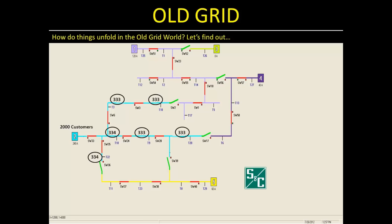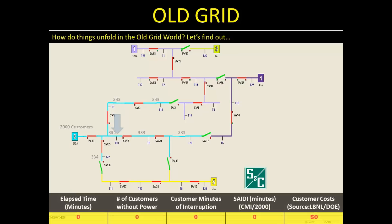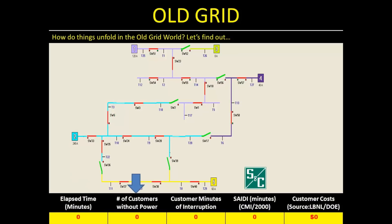This feeder is going to have a short circuit, and we will see how the old grid deals with it. We'll keep track of elapsed time in minutes, the number of customers without power at any point in time, and the cumulative minutes customers have been out of service. We will also track an index called SAIDI — the System Average Interruption Duration Index — which tracks the number of minutes the average customer is out of power. SAIDI equals cumulative minutes of interruption divided by the number of customers, which on our feeder is 2,000.